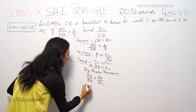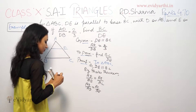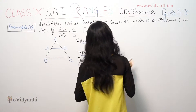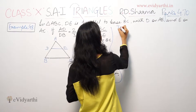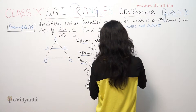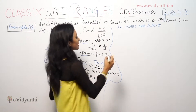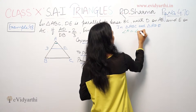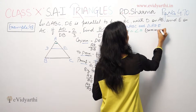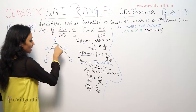This ratio is equal to AB by AD is equal to AC by AE. Now if we have triangle ABC and triangle ADE, in ADE the angle A is common. So we can see that angle A is equal to angle A, and AB upon AD is equal to AC by AE.